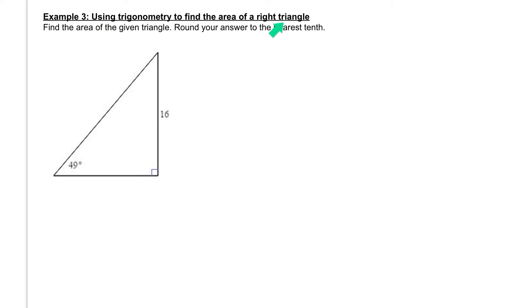In example 3, we're going to use trig to find the area of a right triangle. Area of a right triangle is going to be very similar to what you're used to, where we can take area is equal to 1/2 times the base times the height.